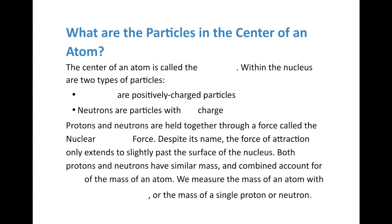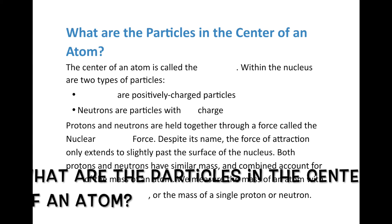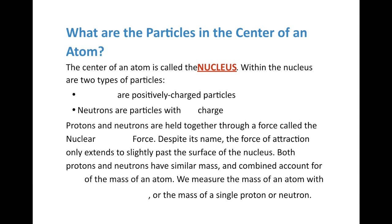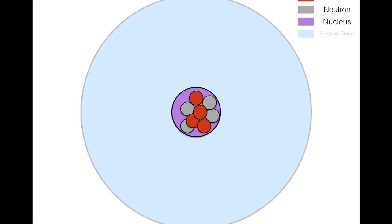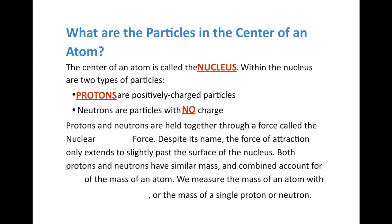Let's look more at the particles in the center of the atom — we call it the nucleus. Within the nucleus there are two types of particles. The first are protons, which are positively charged particles. Then we have neutrons, which are particles with no charge — a neutral charge. The protons have a positive charge (shown in red) and the neutrons have no charge (shown in gray). Protons and neutrons are held together by one of the four fundamental forces of the universe called the nuclear strong force.